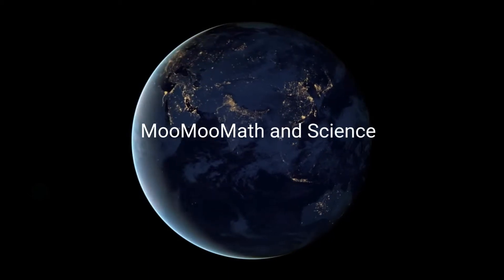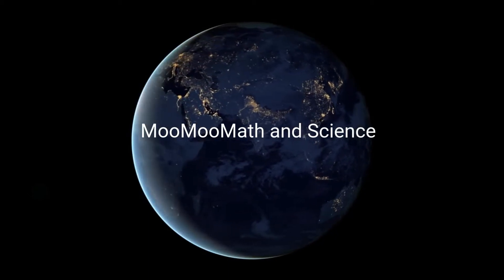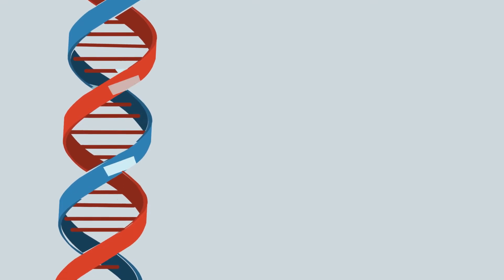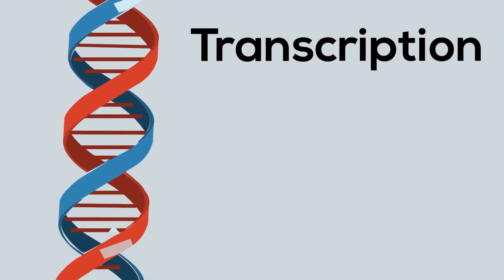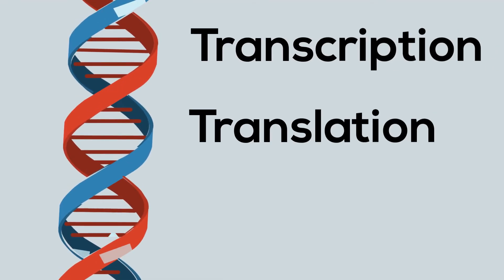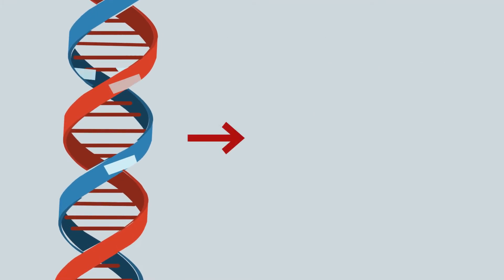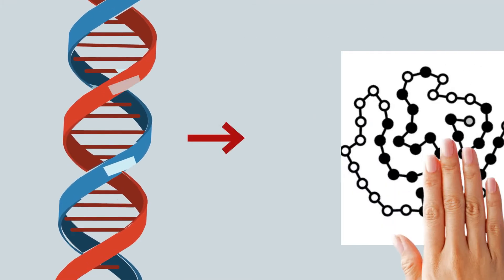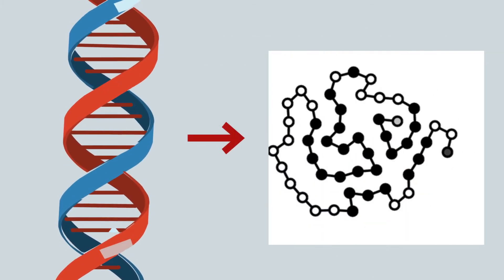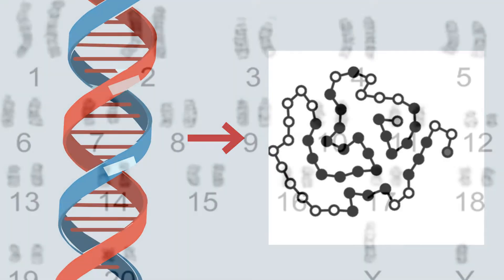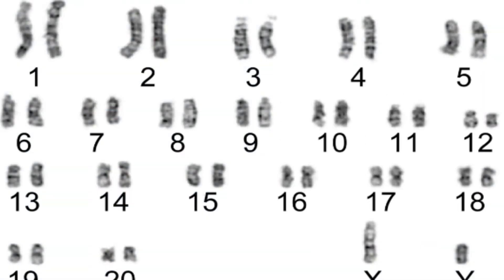Welcome to MooMooMath and Science. In this video, I'd like to talk about how proteins are created using transcription and translation. How does the cell convert DNA into a protein? Chromosomes contain genes, and the genes contain the genetic code for proteins.